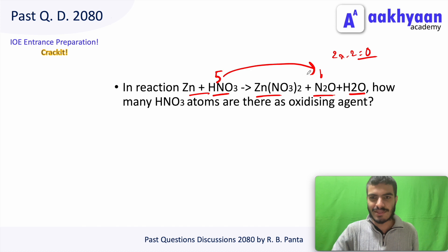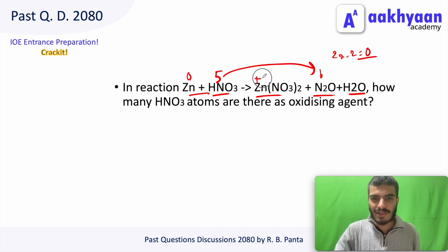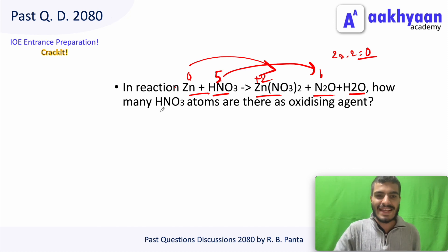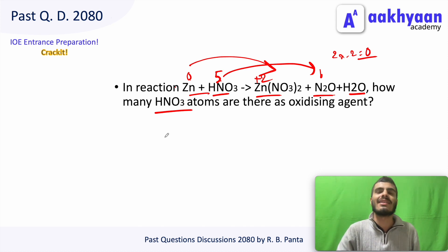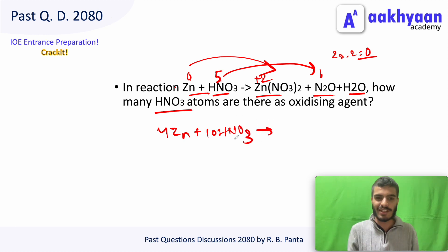HNO3 undergoes reduction, acting as the oxidizing agent. For the reaction with Zn: Zn starts at oxidation state 0 and goes to +2. The reduction in HNO3 must balance this oxidation change. Balancing gives: 4Zn + 10HNO3 → balanced products, so 10 molecules of HNO3 are used in the reaction.